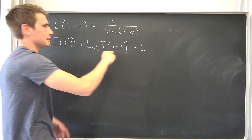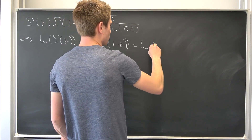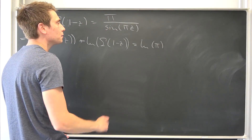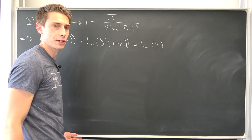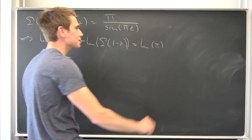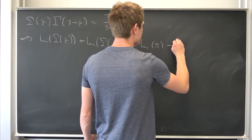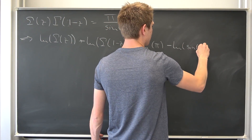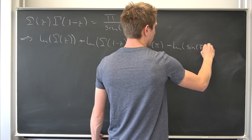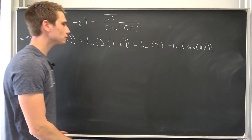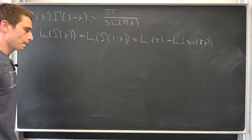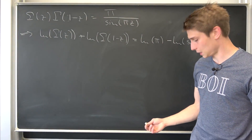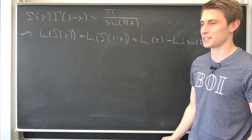I already worked it out — this gives us the natural log of pi, minus the natural log of sine of pi times z. Natural log of pi is probably irrational — I'm pretty certain that it is. And now we can differentiate both sides to actually get to our digamma function.